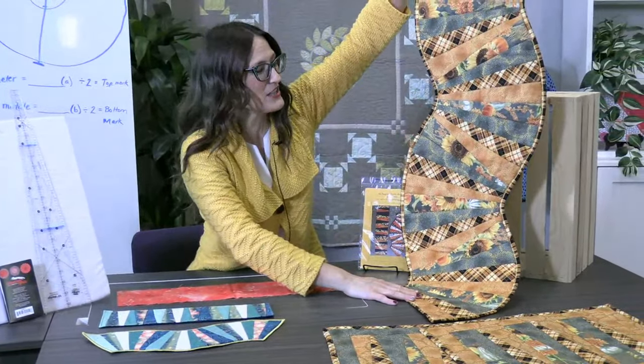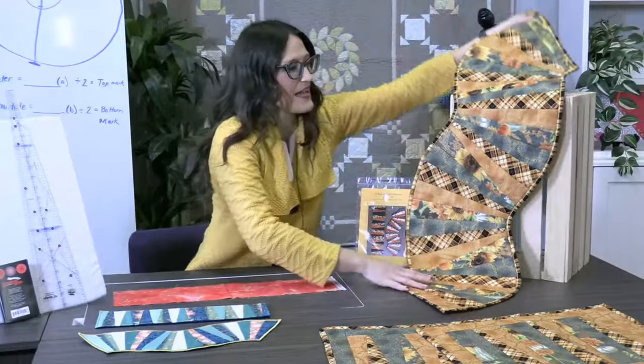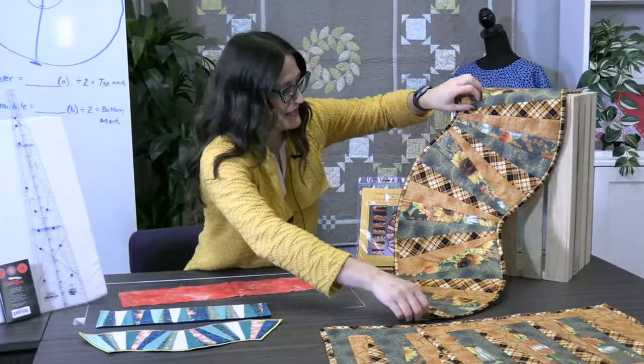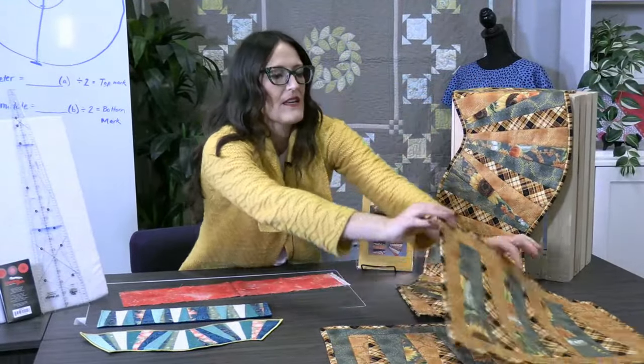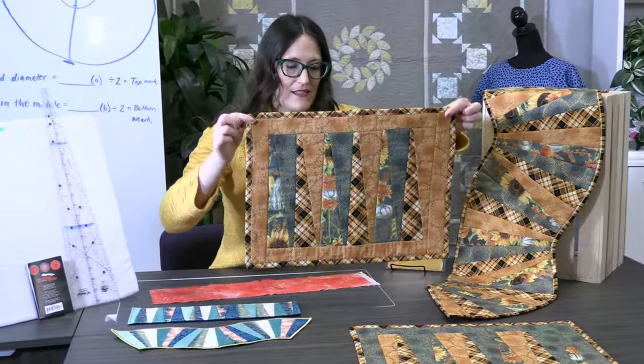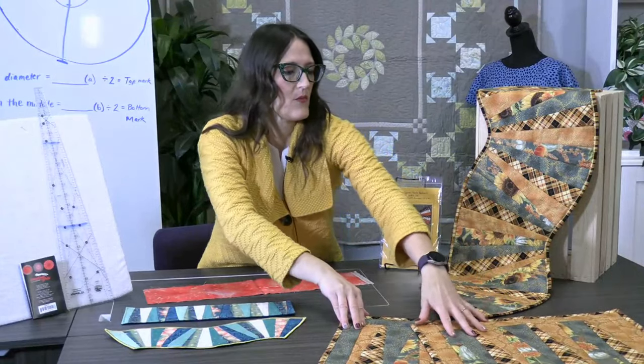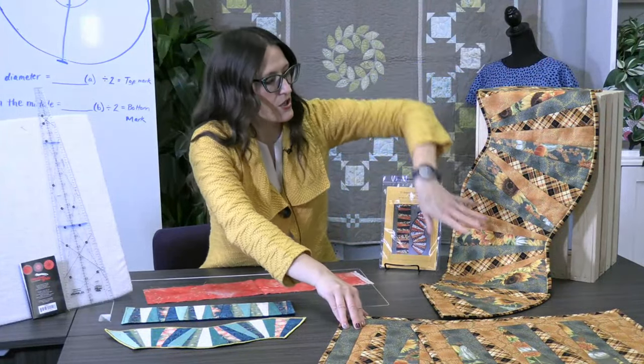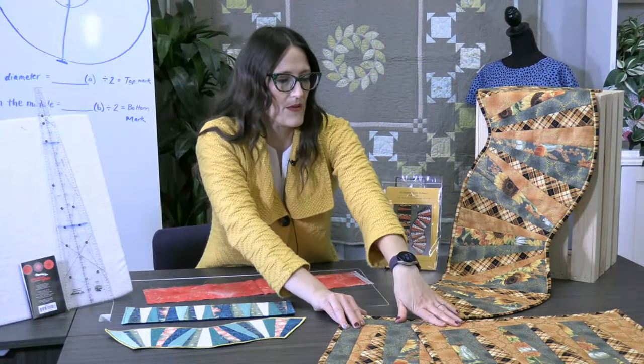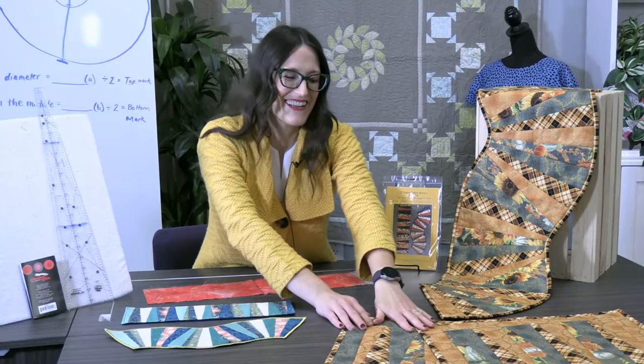I love that and it's all done with the wedges so you can do it this kind of wonky curvy way or you can do it as a straight way where these ones were made into place mats. Using the same wedges you can either make this curvy table runner or you can make a long straight table runner either way or place mats in this case.